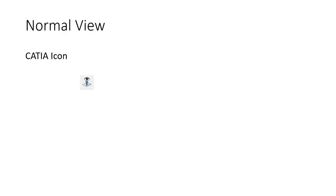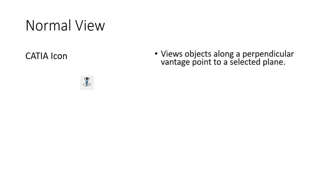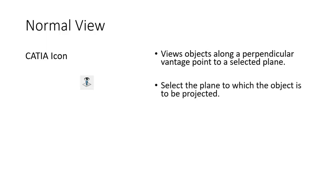Finally, we go over the normal view. Here is the CATIA icon — an eye looking at a plane. This is great because it takes your view and lines it up with a perpendicular vantage point that you select by choosing a plane on the part — either a plane you've made yourself or a face of the object — to get a perpendicular view of it.